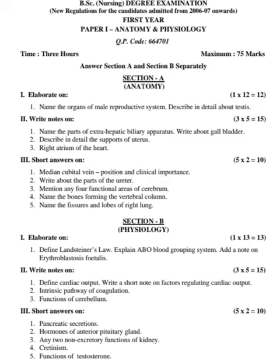Section B: Physiology. Elaborate on 13 marks question. First: define Landsteiner's law, explain the ABO blood grouping system, and add a note on erythroblastosis fetalis. Write notes on 5 marks questions. First: define cardiac output and write a short note on factors regulating cardiac output. Second: intrinsic pathway of coagulation. Third: functions of the cerebellum.